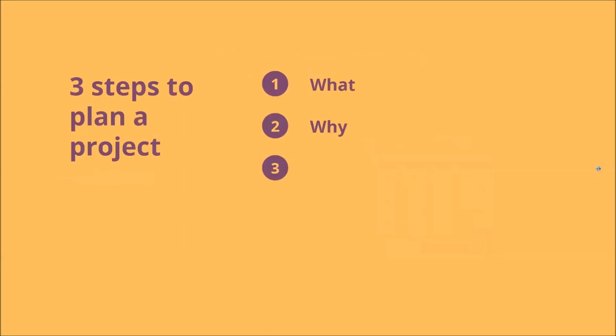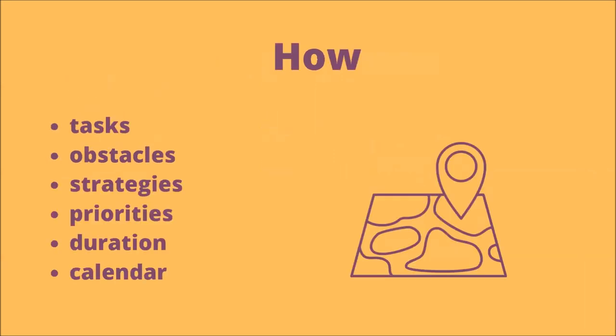So that was the SMART goal, which covers the what, but also — as you've noticed with the R of Relevant — the why. Those are two of the three steps to plan a project. The third one is how. And how includes the tasks, but also the obstacles, the strategies, the priorities, the duration, and the calendar. I'm going to explain it all to you.